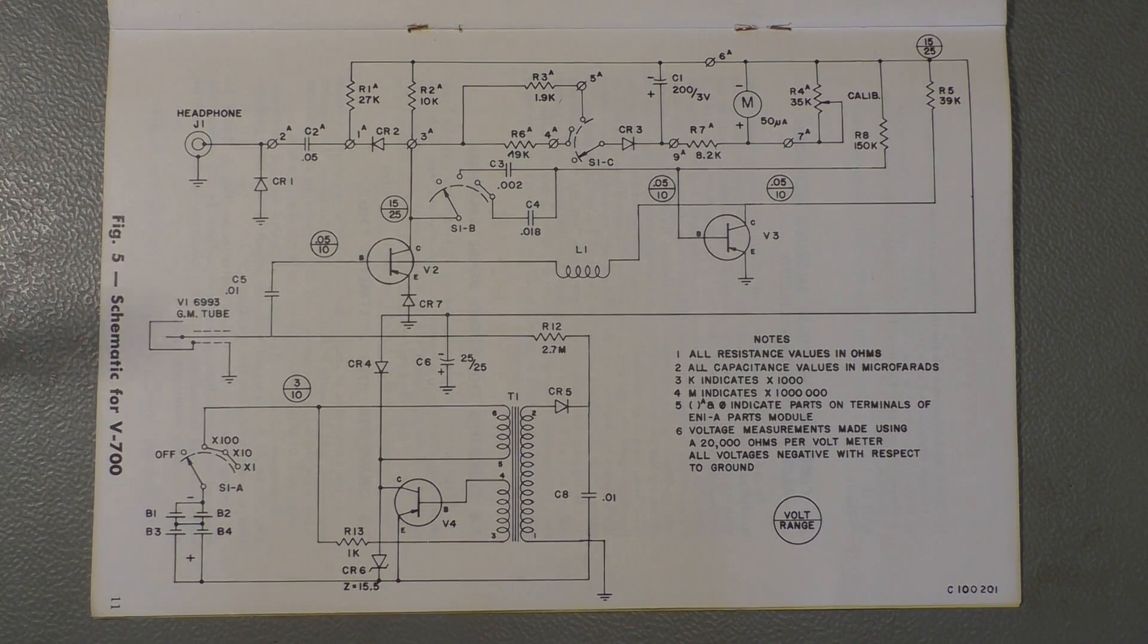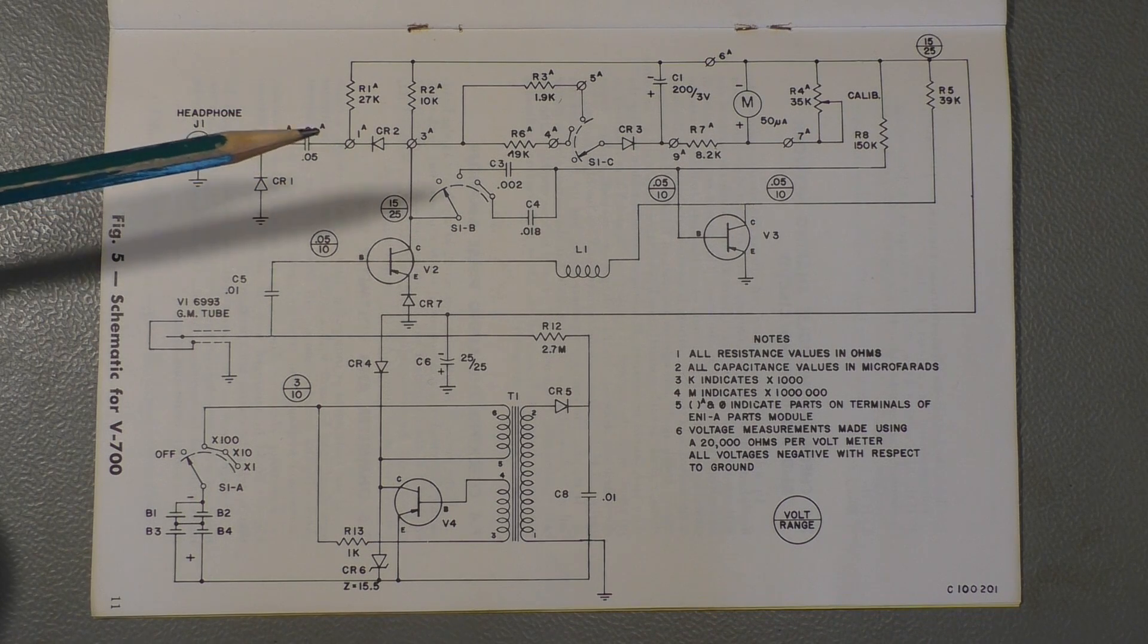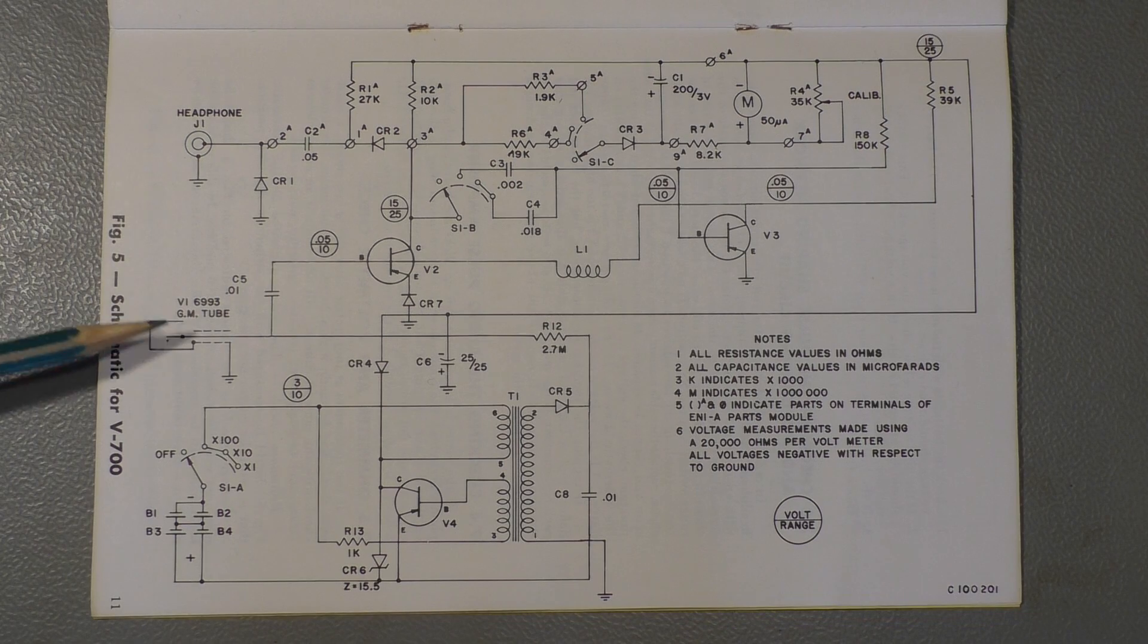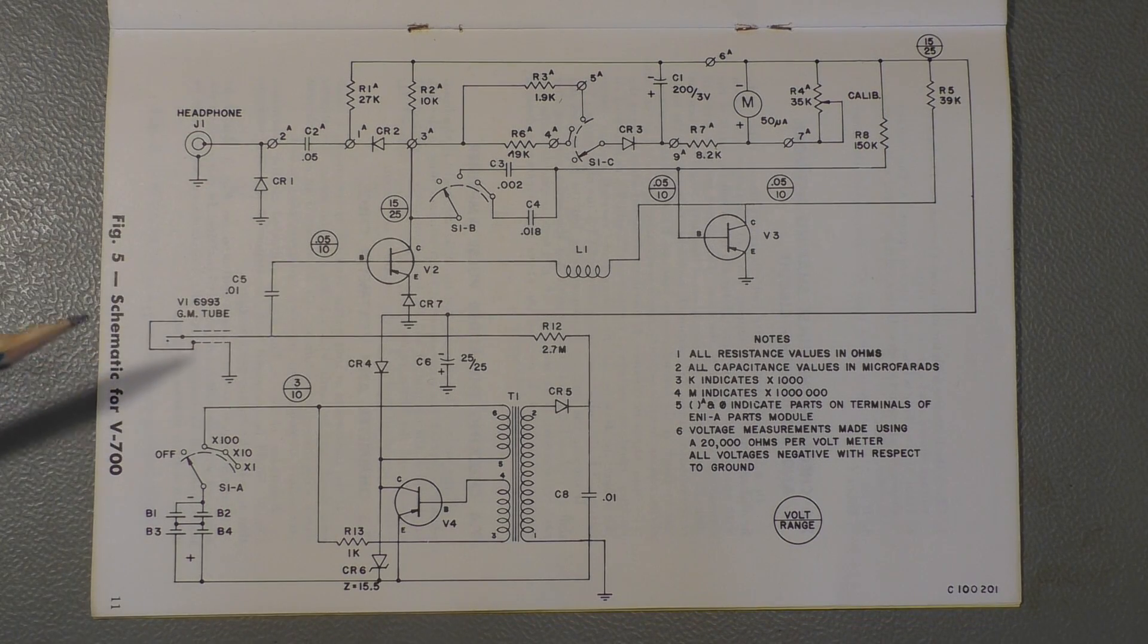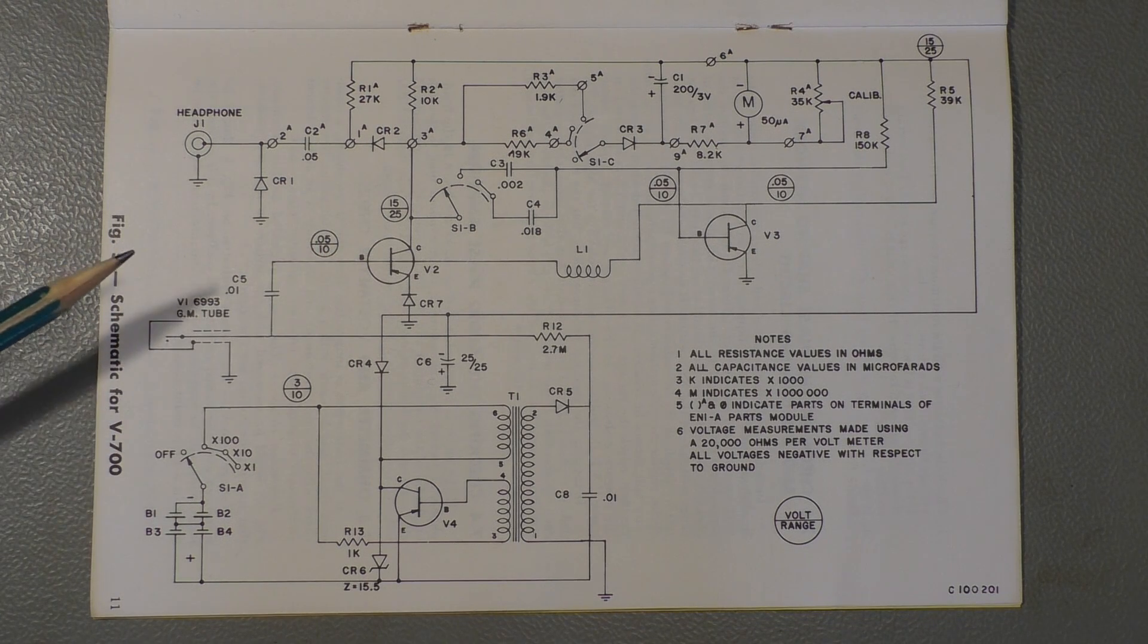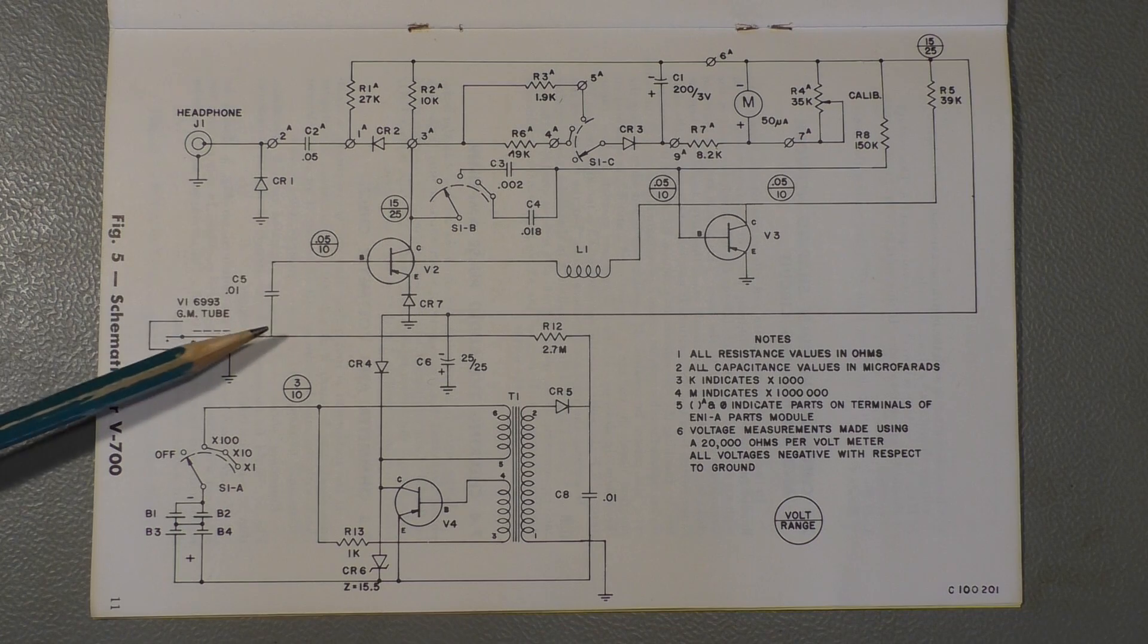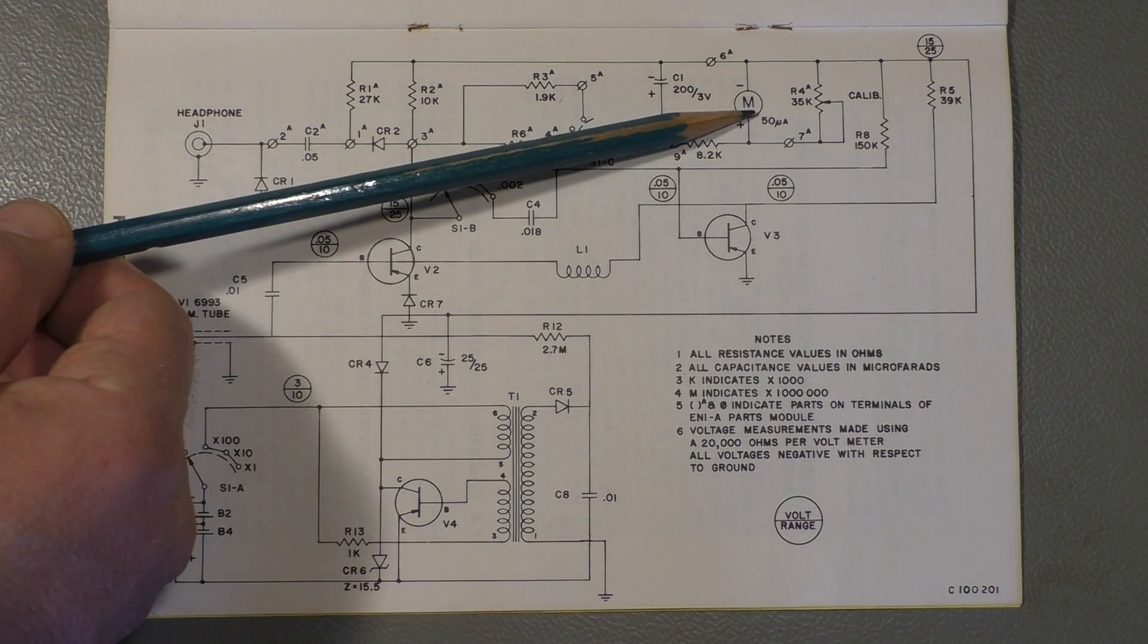So, what the Geiger-Müller counter does, is in fact, it only counts the amount of incidence from the tube here. It doesn't distinguish between high energy or low energy particles. It just tells you how many particles per minute or per hour or whatever come along. And this will be displayed here on the meter.